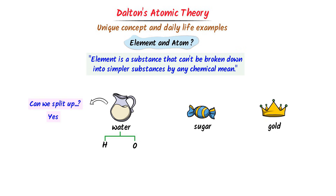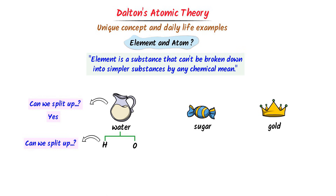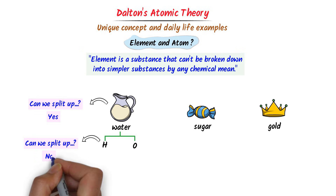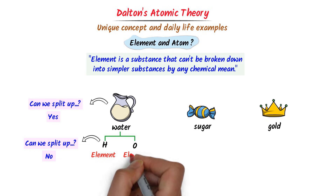Secondly, can we split up hydrogen into something else? The answer is no. We cannot split up hydrogen into something else, so we call it an element. Thirdly, can we split up oxygen into something else? The answer is no. We cannot split up oxygen into something else, so oxygen is also an element.